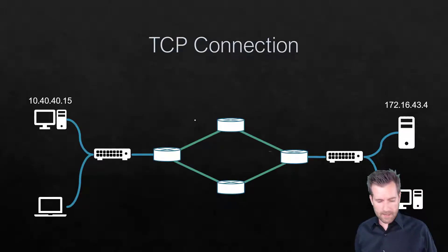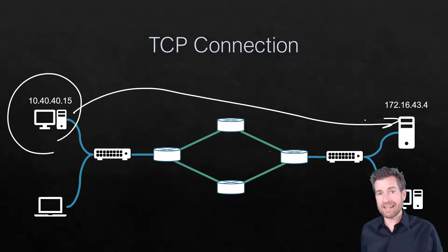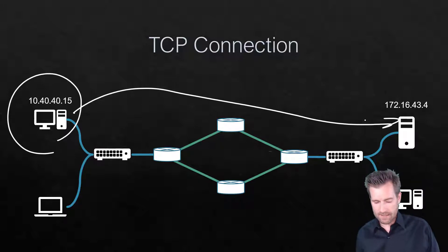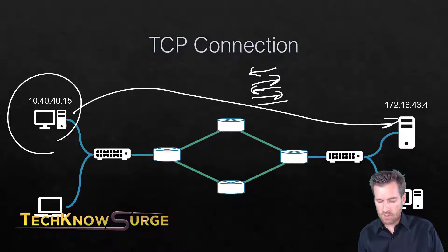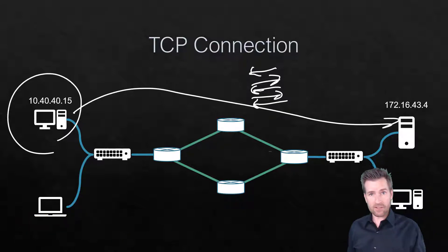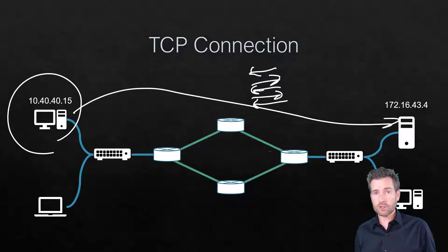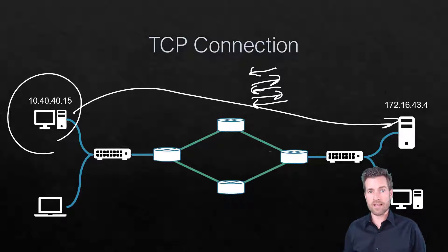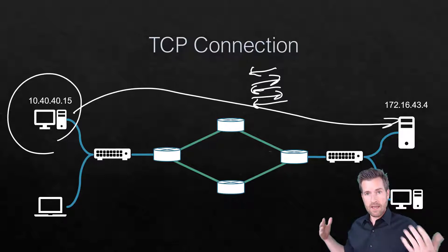With TCP connections, a client machine will reach out to a server machine and establish a connection. Once that connection is established, there'll be lots of communication going back and forth between these two devices to transfer data. After all the data has been transferred and the connection is no longer needed, it will terminate. So TCP starts up a connection, does the communicating, and then tears it back down afterwards.